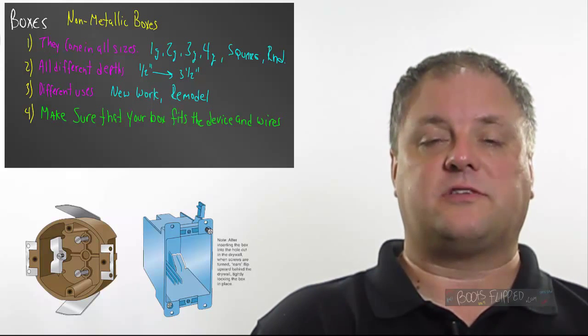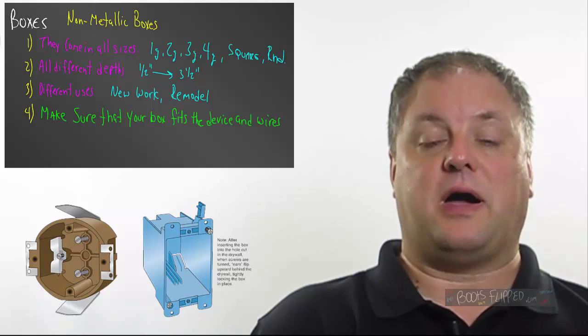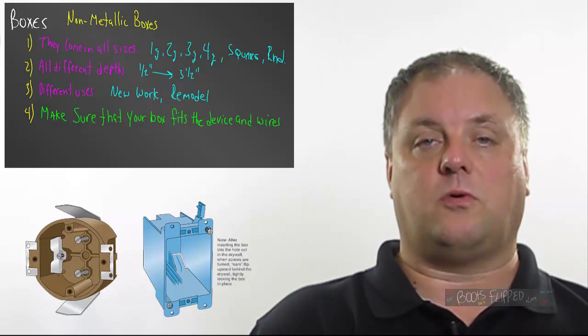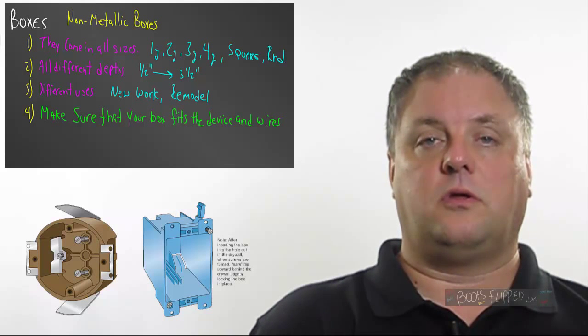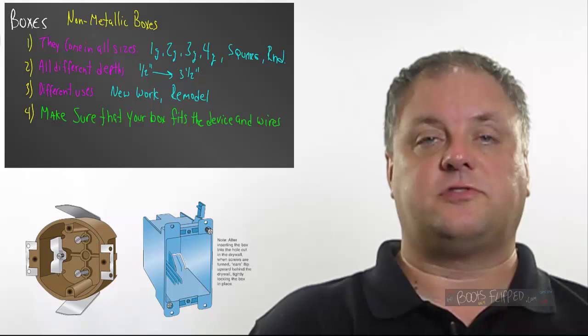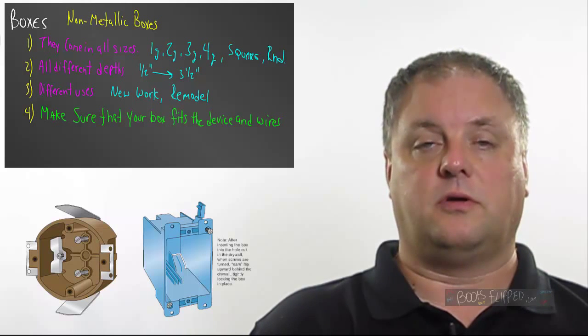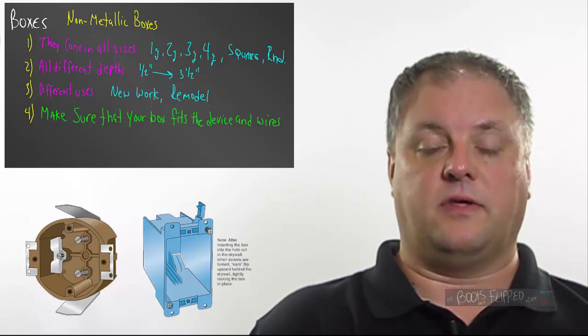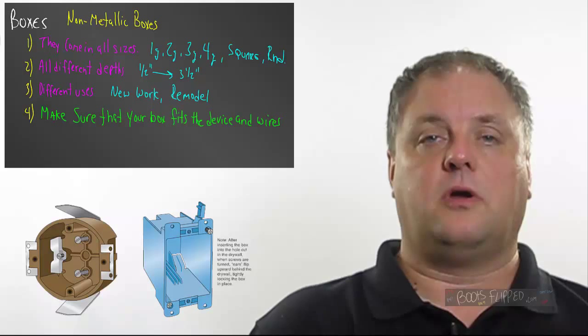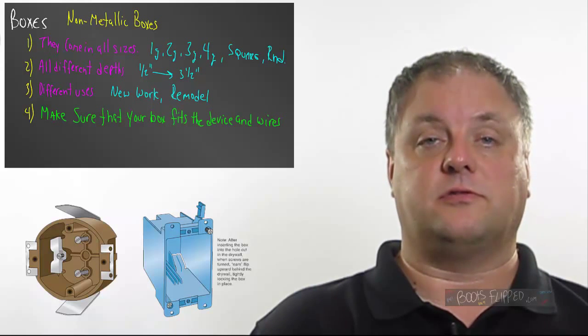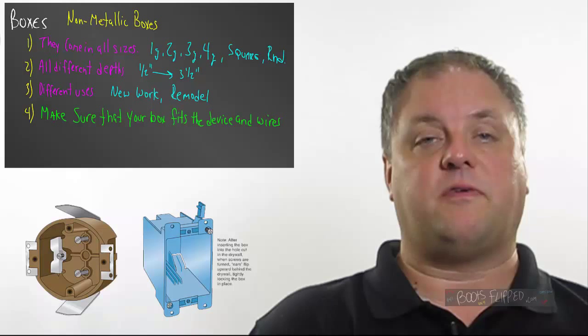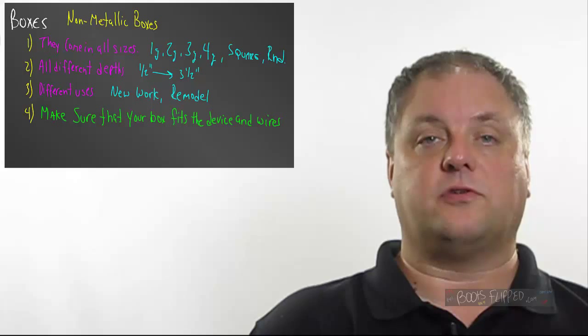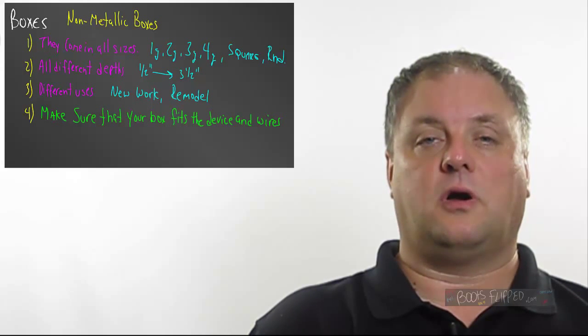Well, how do you hold those boxes in a wall? Many of those boxes come with integral clamps. So, when you put the box into the wall, you actually use screws, and it flips up little ears behind the drywall, and it secures the box between the ears on the front of the box and the ears behind the drywall. And those are really nice boxes to use. You'll find, though, that we find boxes all the time that don't have the ears. Now, how do we support those?